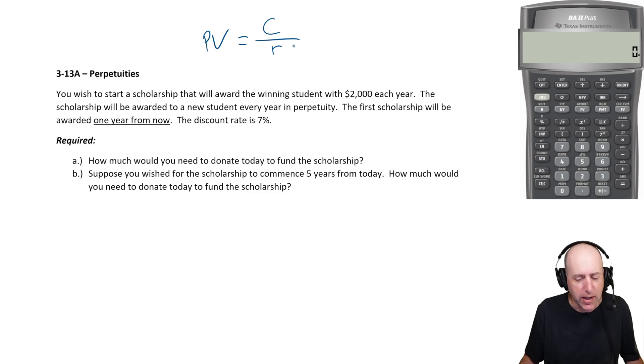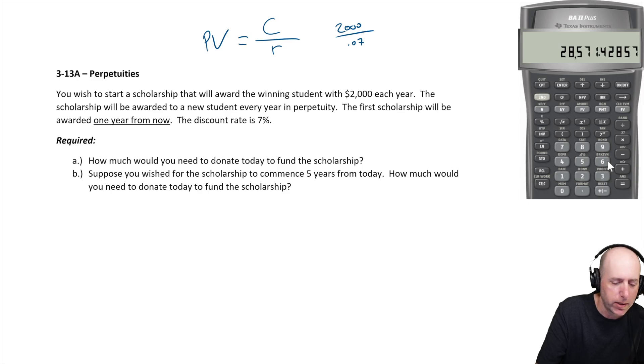Okay, so it's two thousand divided by 0.07. Two thousand divided by 0.07 is 28,571. That's how much you would have to donate today.